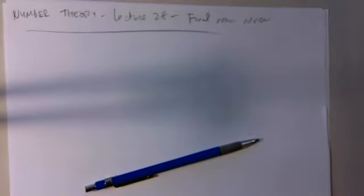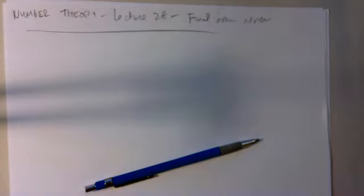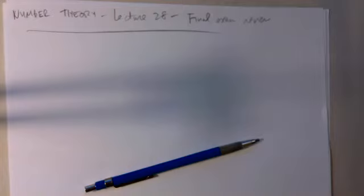Okay, number theory, 28th class. This is for the final exam review or any other questions you might have. Anything you would like me to do? Good morning. We can start maybe reviewing from 12 down, because I think from 1 to 11 is just the review from the last exam. So maybe you could do 12.